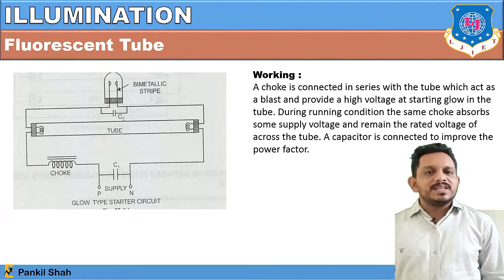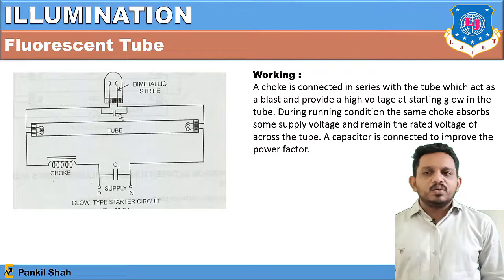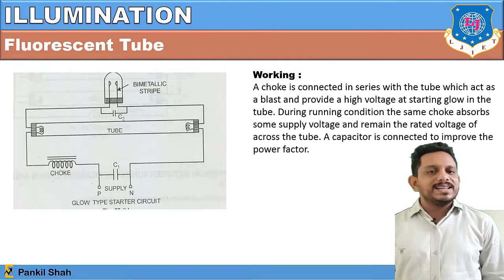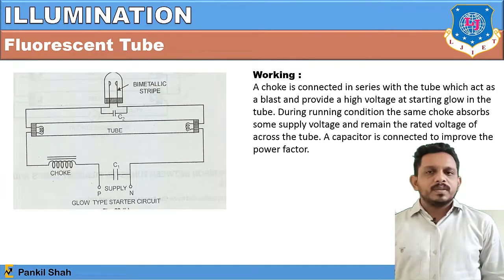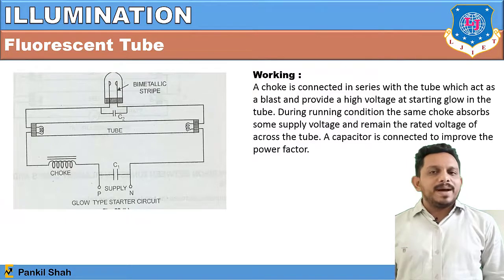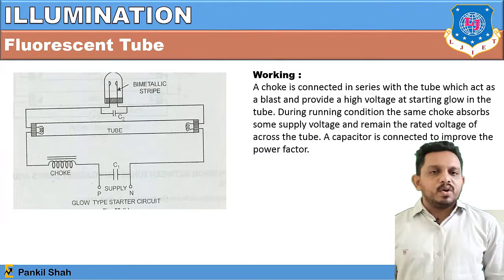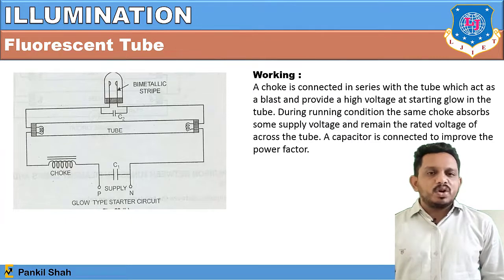The fluorescent tube has a glass tube with two filaments or conducting terminals at the corners, connected to a bi-metallic starter, a choke (ballast), and a capacitor in parallel to improve power factor. The choke is connected in series with the tube and provides a high voltage at starting, since the tube requires high voltage to initiate discharge at 230 volt supply.